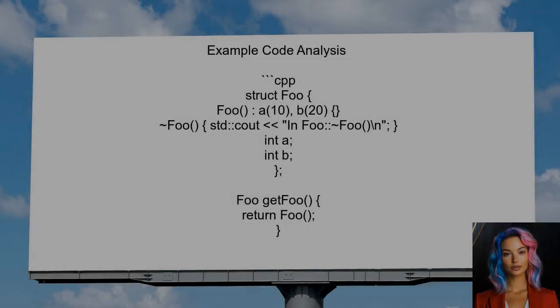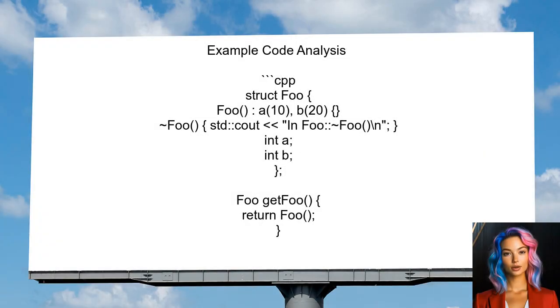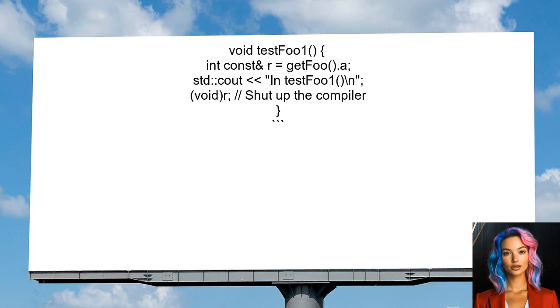Next, examine the example code provided. In this code, a temporary object is created when calling the function getFoo, and a reference is bound to one of its members.